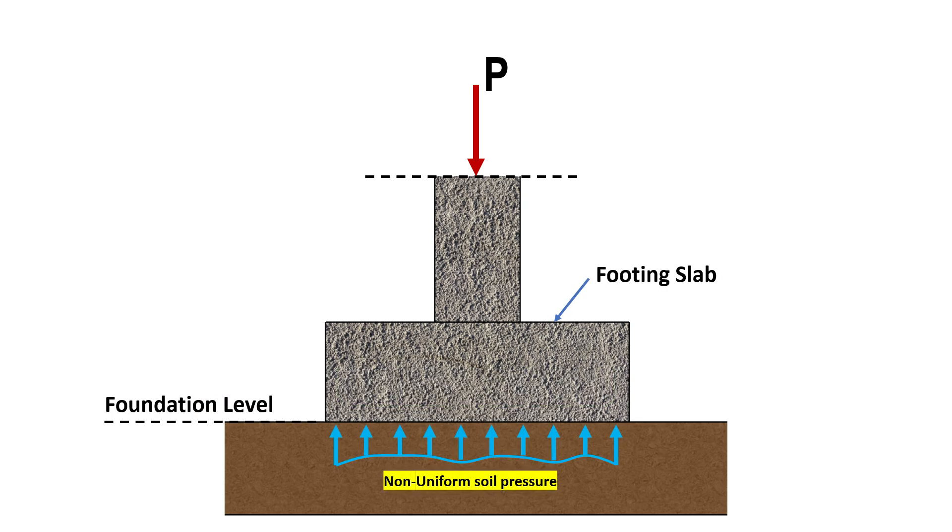The pressure distribution of soil at the base of footing is often non-uniform and it depends on the rigidity of footing and the soil properties. For simplicity, a linear distribution of soil pressure is commonly assumed while designing the footing.